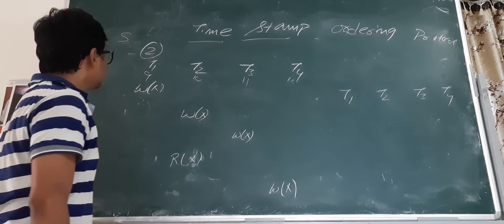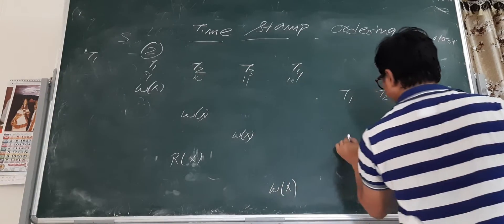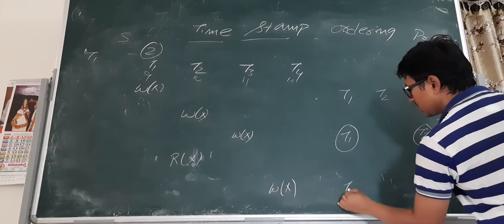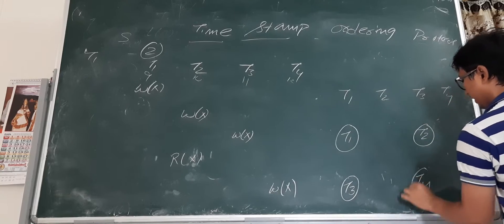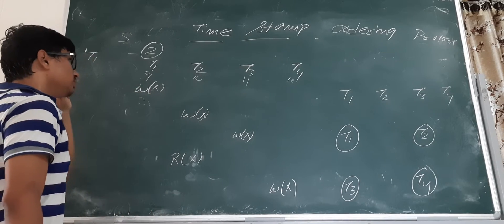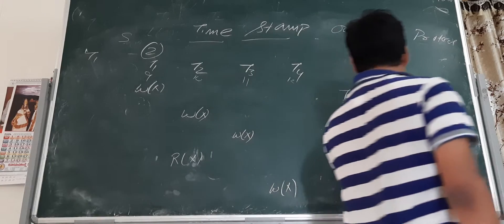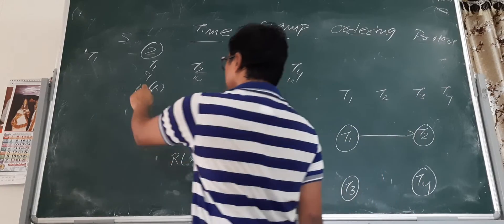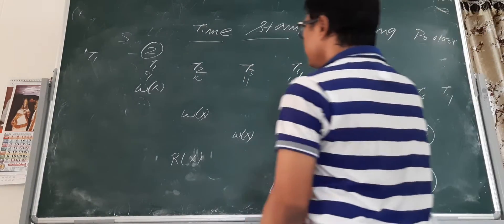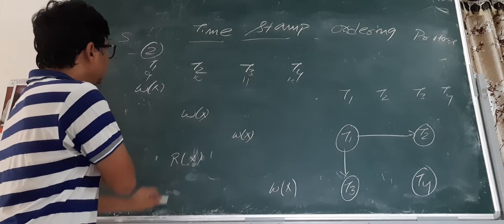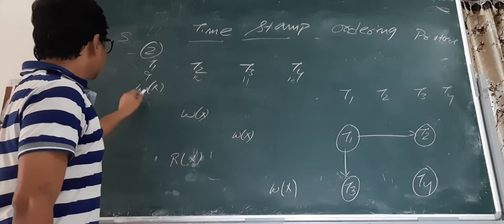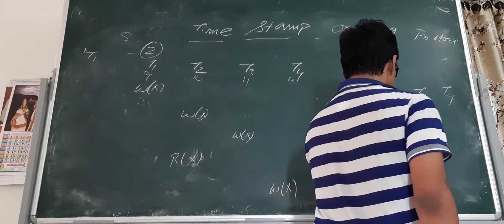Now we will draw the polygraph for simple understanding. How many nodes will be there? Four nodes, because in the given schedule we have four transactions. We have write of x then write of x, so this says transaction one to transaction two. Then write of x and write of x, saying transaction one to transaction three. Then another conflict also says transaction one to transaction two — already written. And another says transaction one to transaction four.